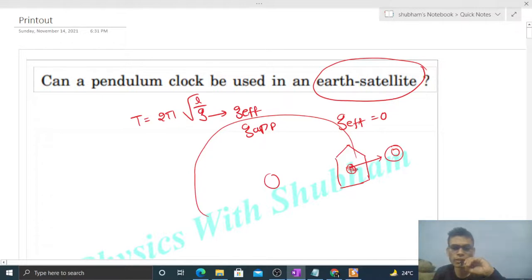It means g_effective will be zero, which means the time period will be infinite. If g_effective is zero, then the time period becomes infinite, right? It means the pendulum won't oscillate at all. It means the clock won't work. So we cannot use a pendulum clock in any earth satellite.